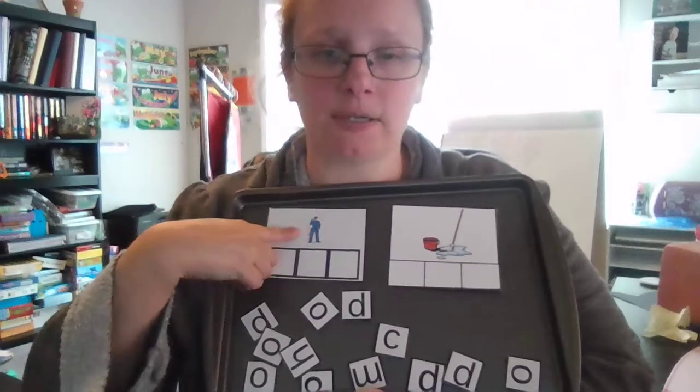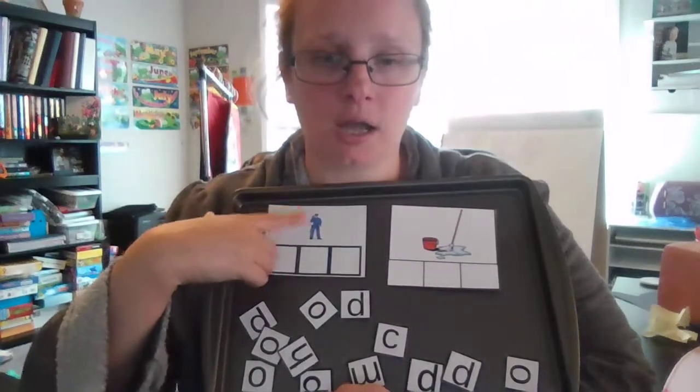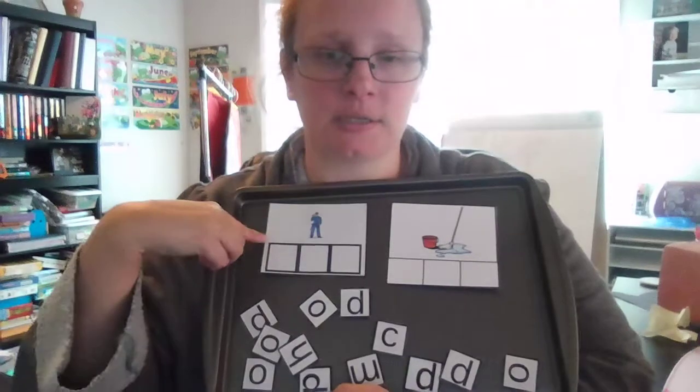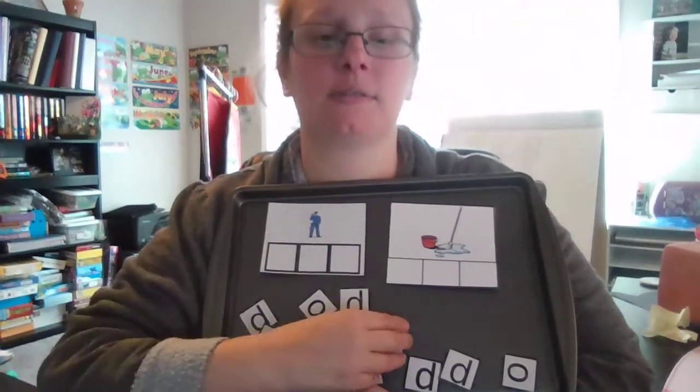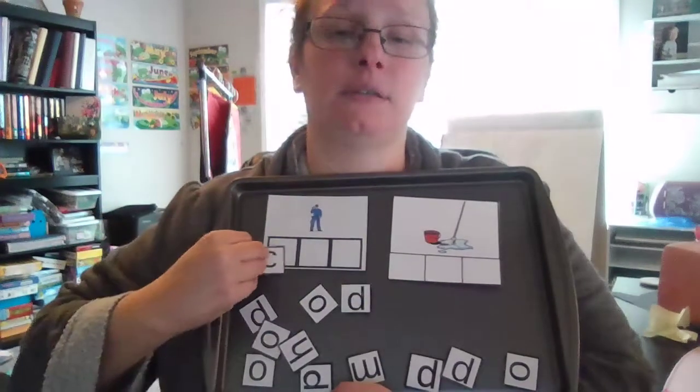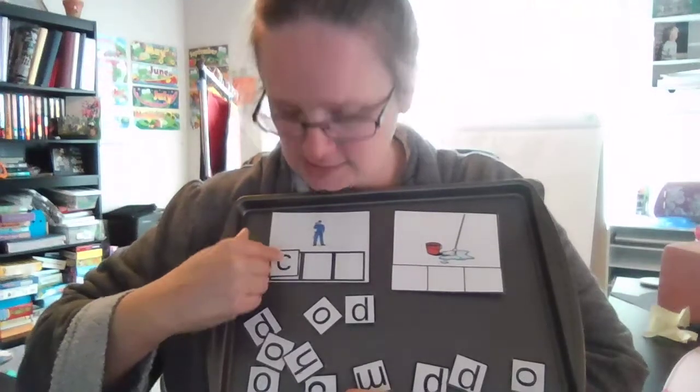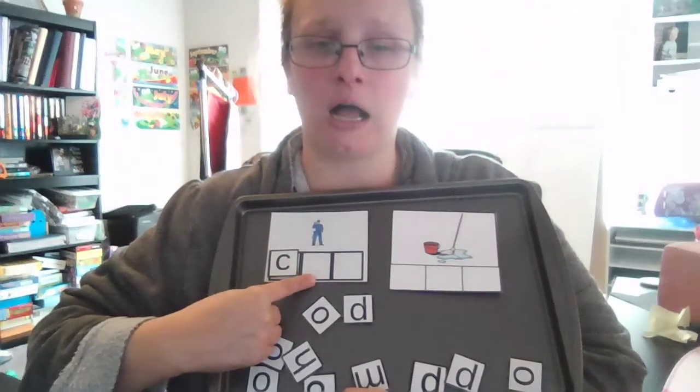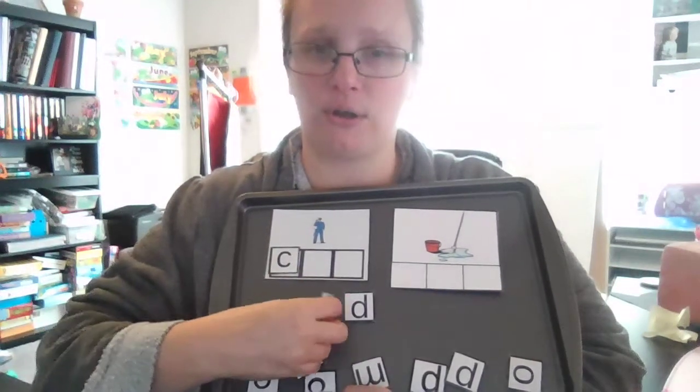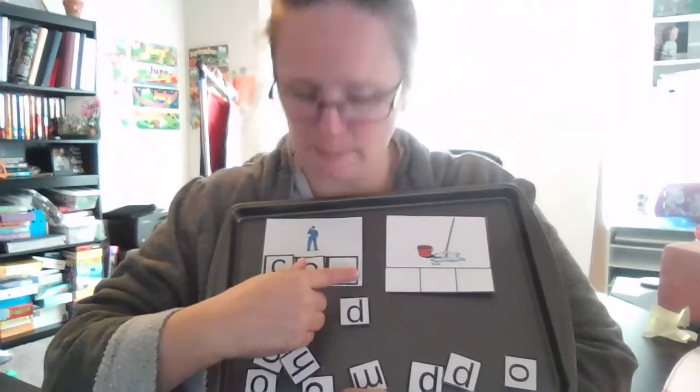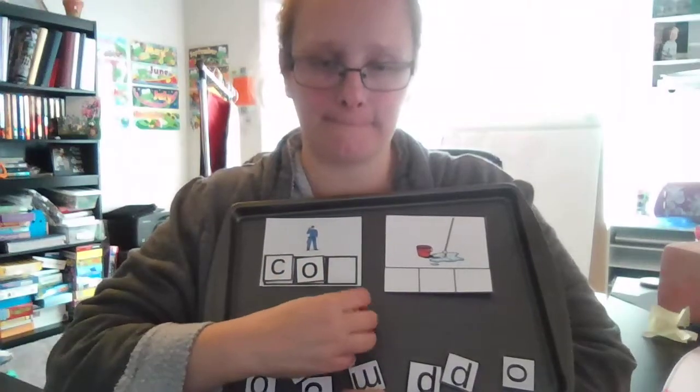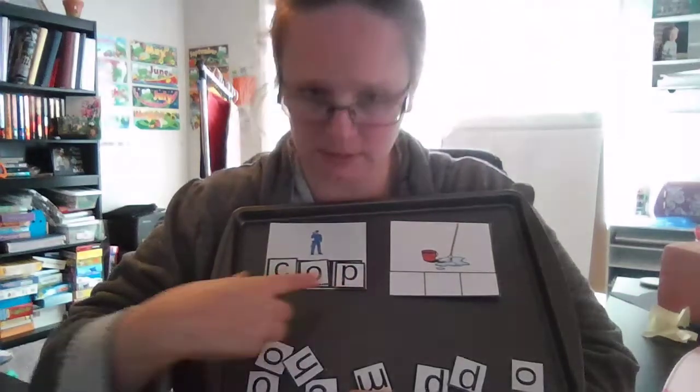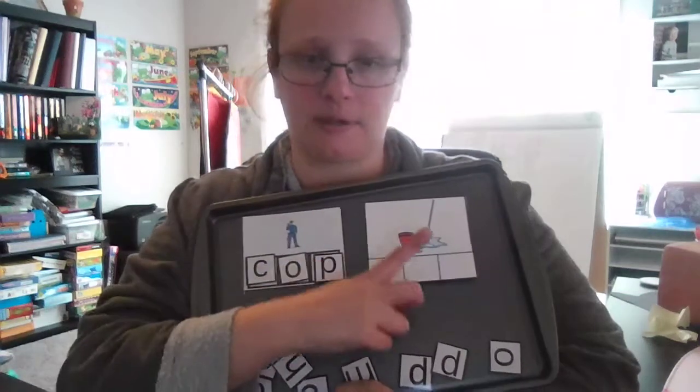So this is a picture of a cop. Kuh-aw. What is the kuh-kuh sound? C. Good. Alright, C. Aw. Oh good. And then puh-puh. P. Good. C-awp. Cop. Alright.